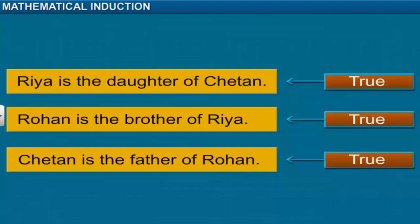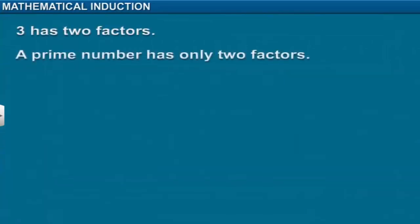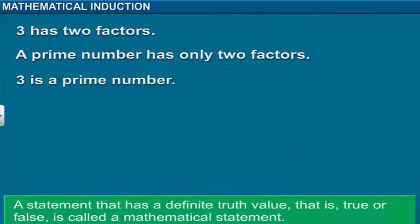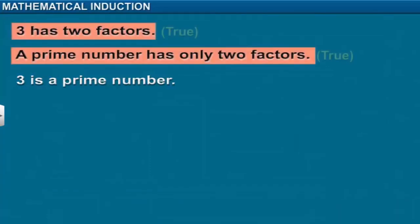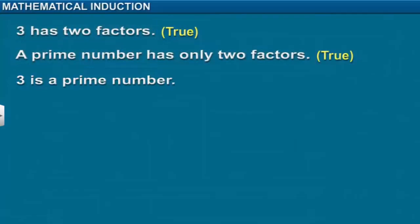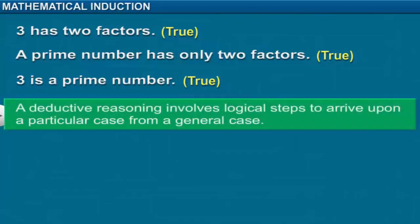Let's apply deductive reasoning to the following mathematical statements. A mathematical statement is a statement that has a definite truth value — that is, true or false. Among the statements given, the first two statements are true. This implies that the third statement is also true. Thus, we can conclude that deductive reasoning involves logical steps to arrive at a particular case from a general case.